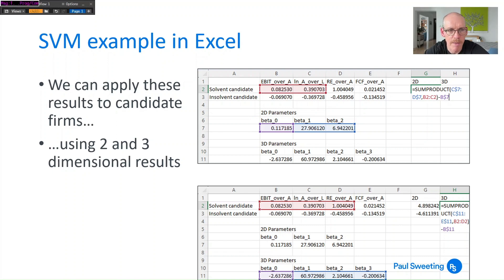Now what you can then do is you can say well what happens if we actually get a couple of candidates? Can we see whether these candidates are solvent or insolvent? And the way we can do this is we can say well let's look at the variables that we've got and apply that formula to them. So for a two variable case look at EBIT over assets and log of assets over liabilities multiplied by those, by the β₁ and the β₂ that we've got and knock off β₀ and then see if we get a number which is either greater than 1 or less than minus 1.